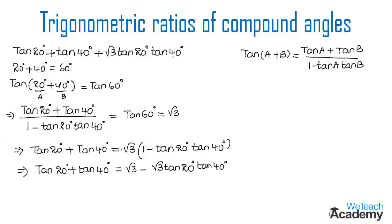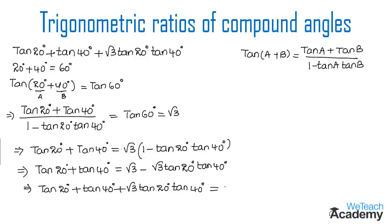We need the value of tan 20° plus tan 40° plus root 3 tan 20° tan 40°. Transferring minus root 3 tan 20° tan 40° to the left-hand side, the minus becomes plus. So we get tan 20° plus tan 40° plus root 3 tan 20° tan 40° equals root 3. Hence, root 3 is the value of this expression.